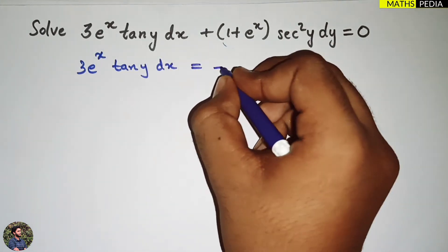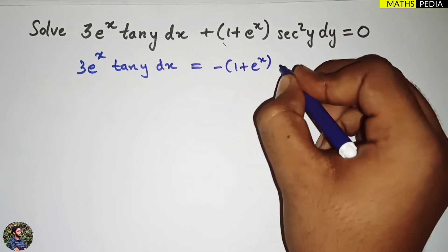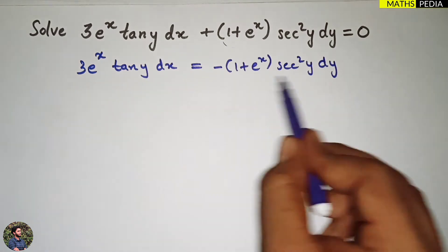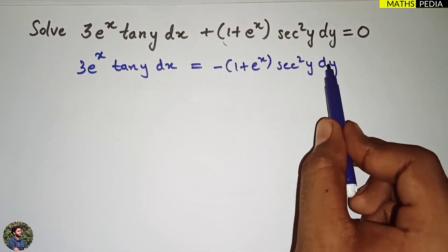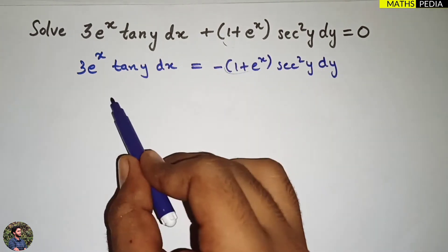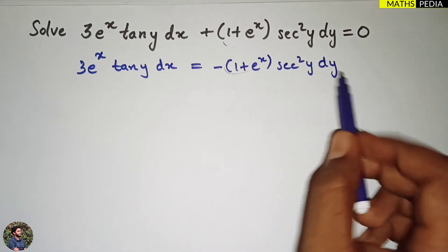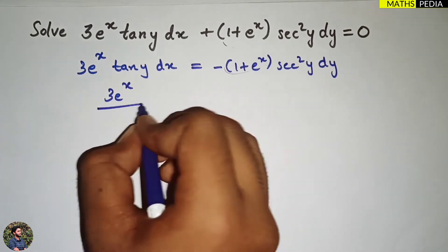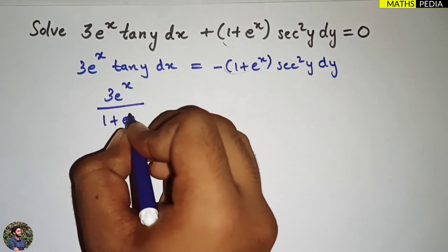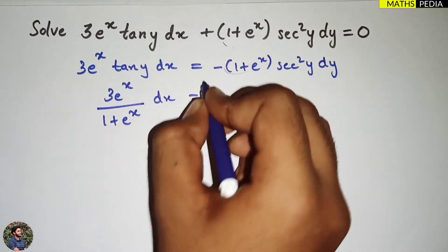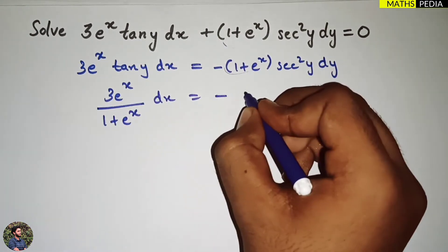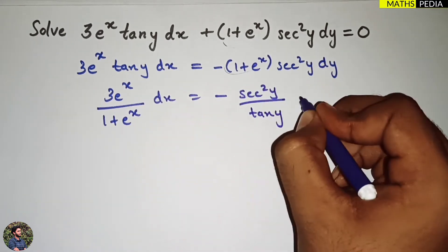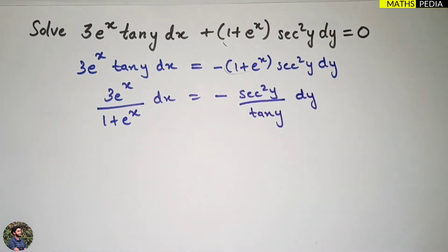...minus (1 + e^x) sec²(y) dy. Now I need to bring dy to one side and tan(y) to the right-hand side. This becomes 3e^x divided by (1 + e^x) dx, and minus sec²(y) over tan(y) dy. After separating, with dy only y terms are there, and with dx only x terms are there.